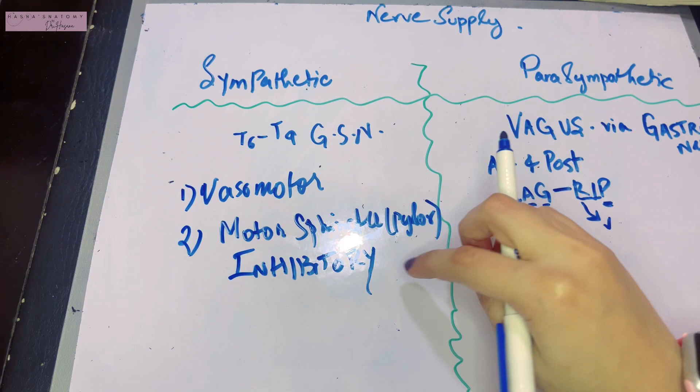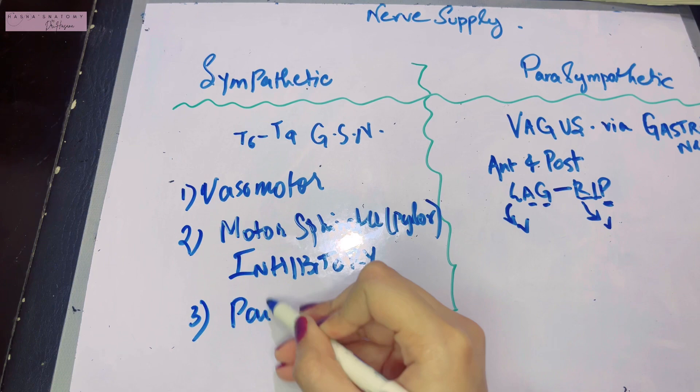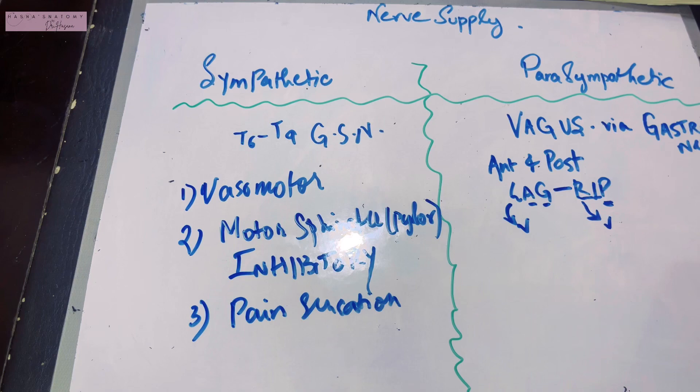The third function is that it gives pathway for pain sensation in the stomach. And then you have the vagal stimulation. The vagal stimulation is the opposite of all of this.